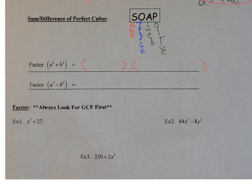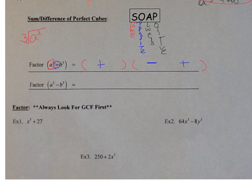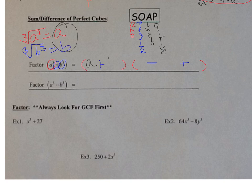Put in your signs: first sign is the same (positive), next sign is opposite (minus), last sign is always positive. Take the cube root of each term: cube root of A³ is A, cube root of B³ is B. In the small parenthesis: A and B. In the large parenthesis: middle is A×B, front is A², end is B².